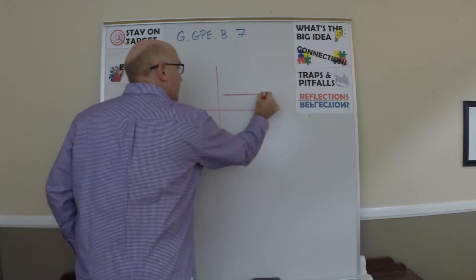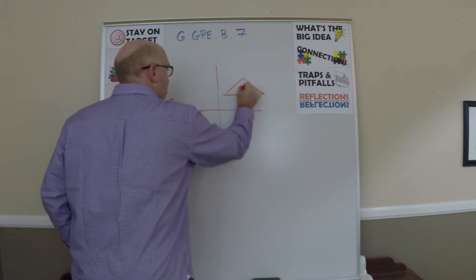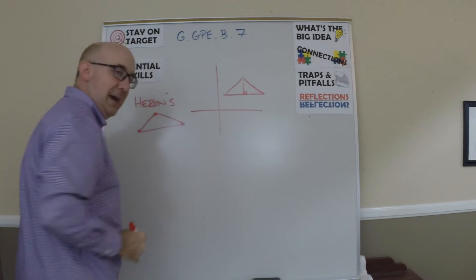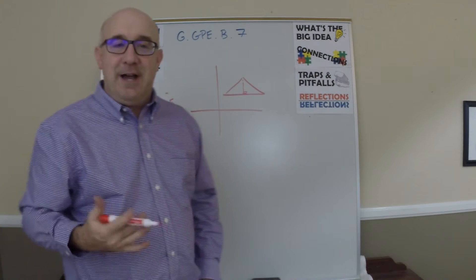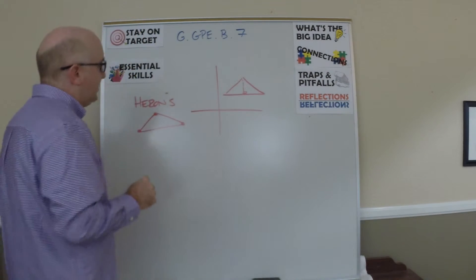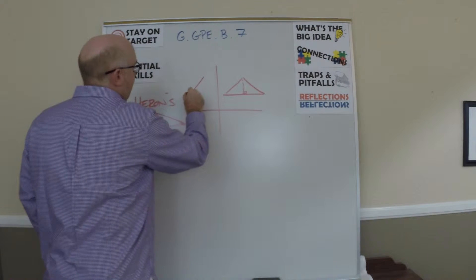Another thing: if we're on the coordinate grid and we have this kind of thing, we can find our height and multiply it by base and divide it by two. But if you had a triangle like this, you could use a box technique for area.